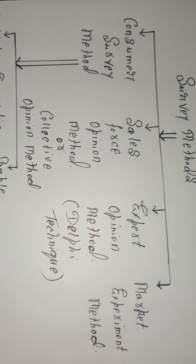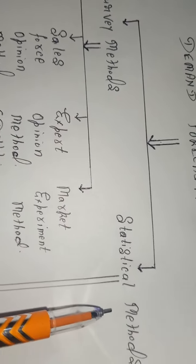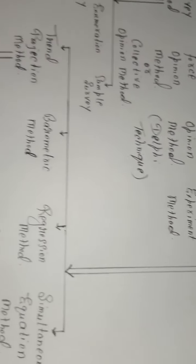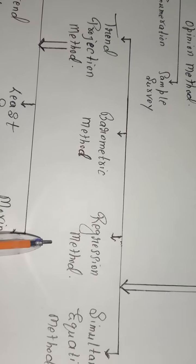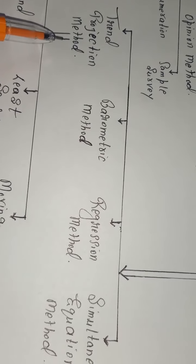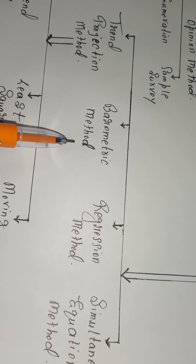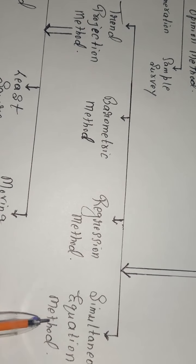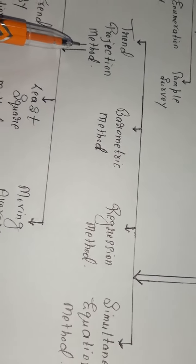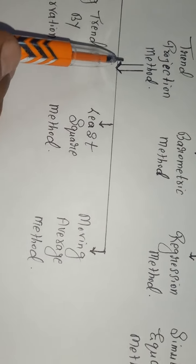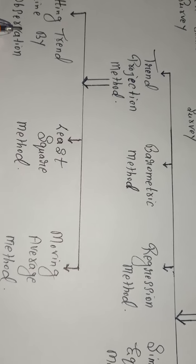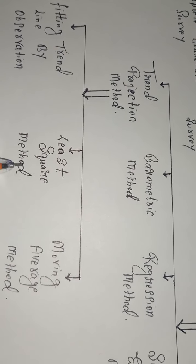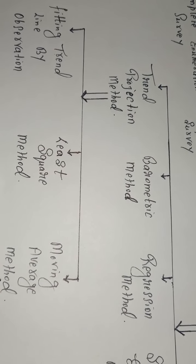The statistical methods can be categorized into four types: trend projection method, barometric method, regression method, and simultaneous equation method. The trend projection method can further be categorized into three parts: fitting trend line by observation, least square method, and moving average method.